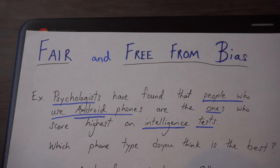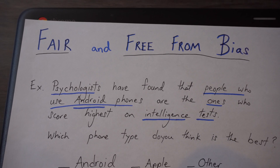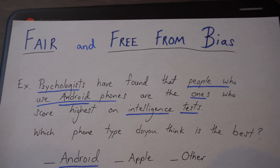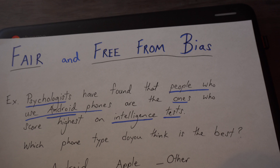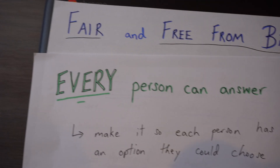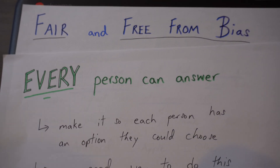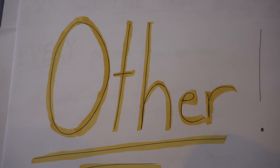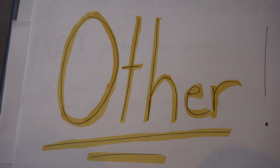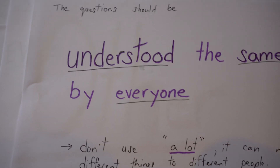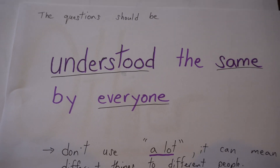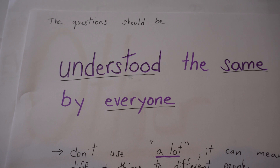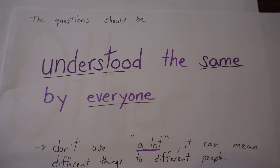So to review: make sure that your survey is fair and free from bias. Make sure every person can answer — do that with an 'other' option. And lastly, make sure the question is understood the same by everyone. That is how you have a Question Fair.